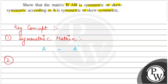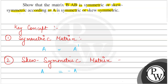The next key concept used is skew-symmetric matrix. The concept of a skew-symmetric matrix says that A is equal to negative of A transpose, also written as negative of A dash.